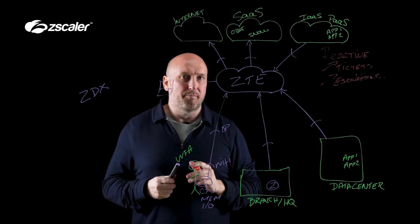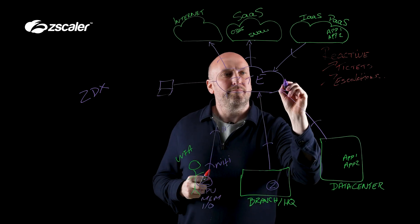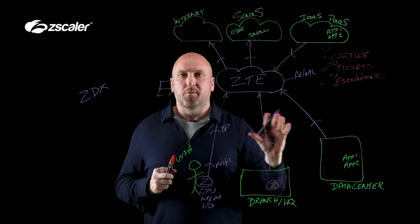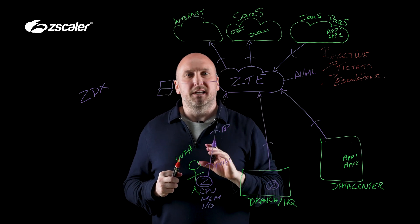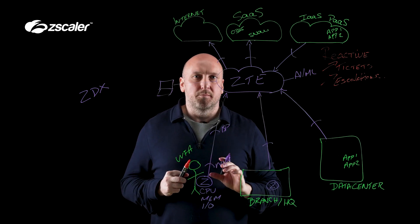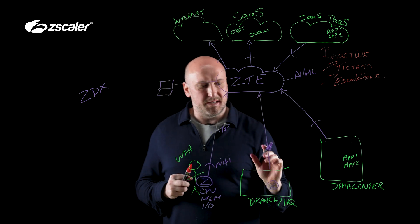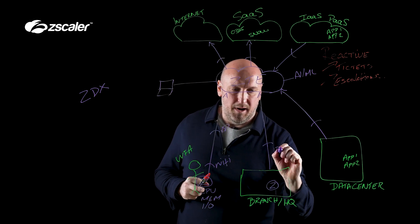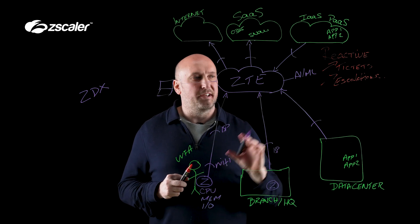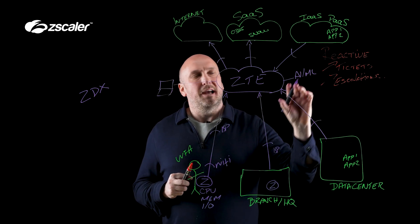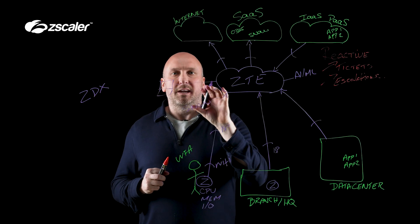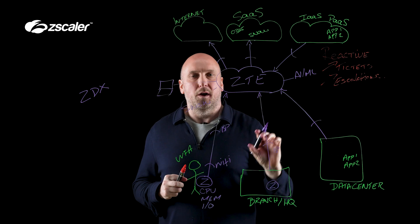First, by consolidating all the data. Second, we leverage AI and ML to tell our organization what good looks like from a baseline perspective, and when something deviates from that good experience, we dynamically fix the problem before more tickets and escalations occur. For example, if users in a branch are having problems with their SD-WAN or their ISP, ZDX's engines will integrate with things like ServiceNow to kick off a workflow, identify where the problem is, and fix it.